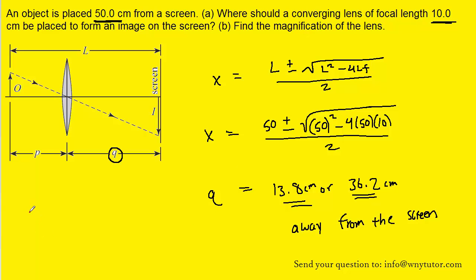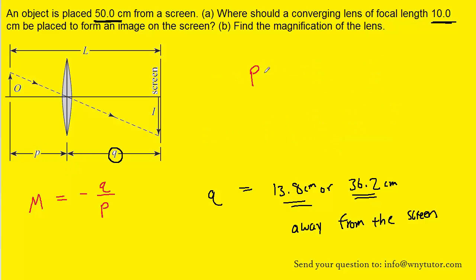Now since there's two values of Q there's going to be two magnifications for part B. We know magnification is equal to negative Q over P. P was the object distance. And we recall from earlier in the video that P was equal to L minus Q. So we can actually replace the P in the magnification equation with that L minus Q. And then we'll go ahead and we'll plug in the two values of Q that we found earlier.